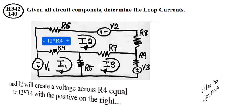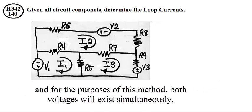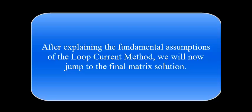And for the purposes of this method, both voltages will exist simultaneously. After explaining the fundamental assumptions of the loop current method, we will now jump to the final matrix solution.